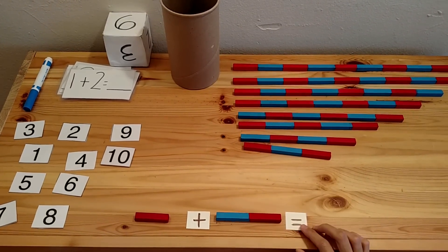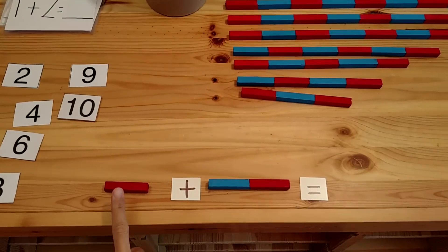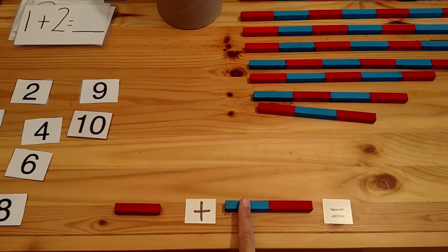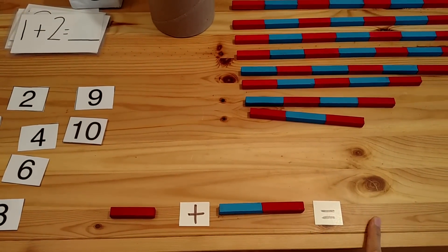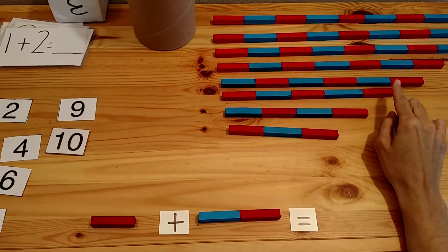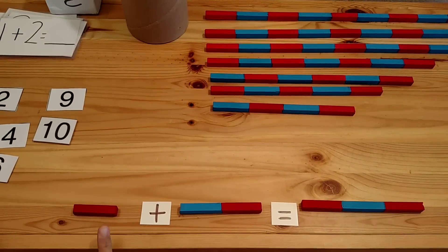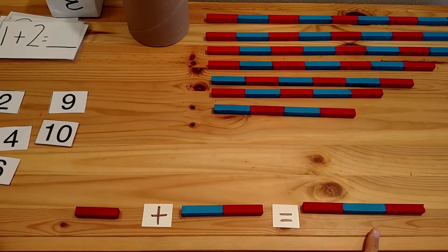One plus two. What is one plus two? One, two, three. Three. Let's put three here. Let's find three. Where's three? Here it is. One, two, three. One plus two is three.